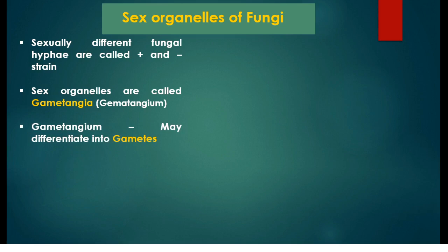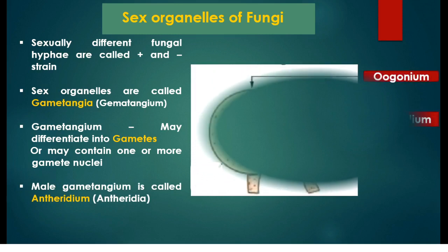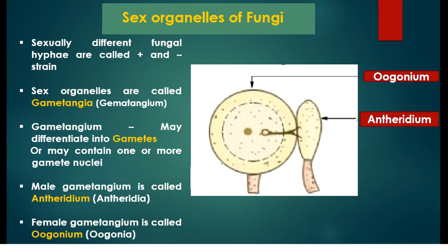Gametangia may differentiate into special sex cells called gametes, or they will simply contain one or more gamete nuclei within a single structure. The male gametangium is called antheridium and the female gametangium is called oogonium.